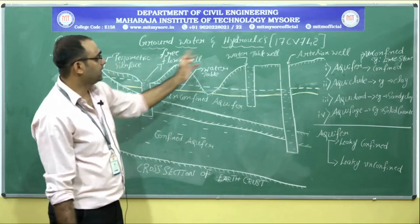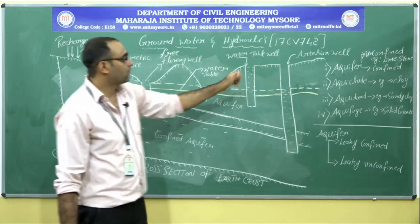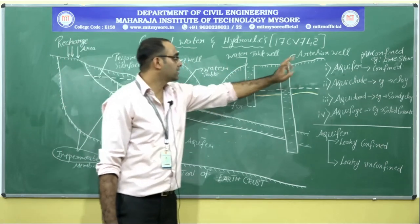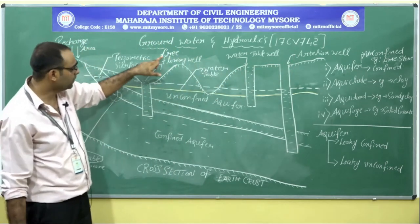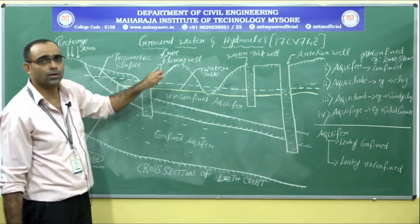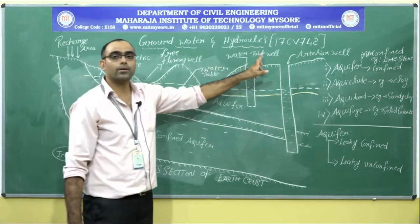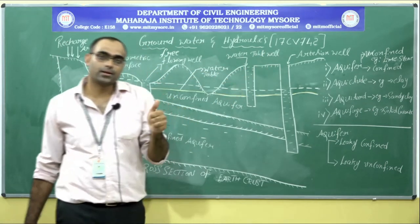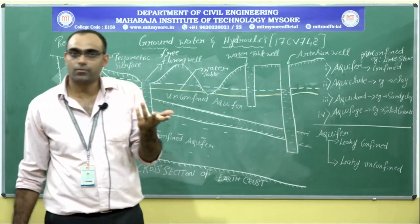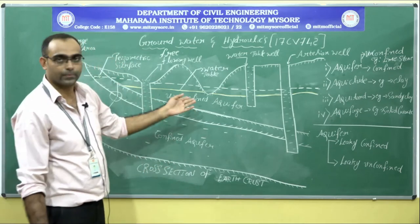These three definitions — artesian well, free flowing well, and water table well — will be asked separately, maybe for one or two marks with a diagram in the exam.